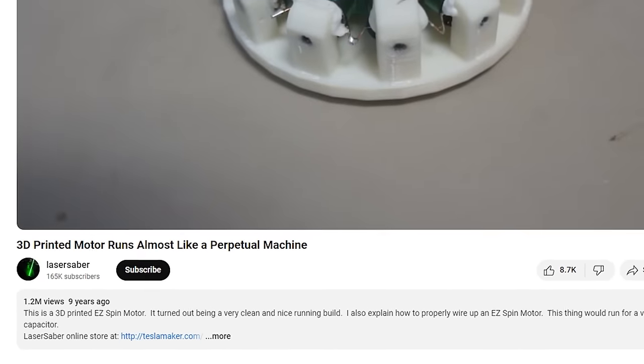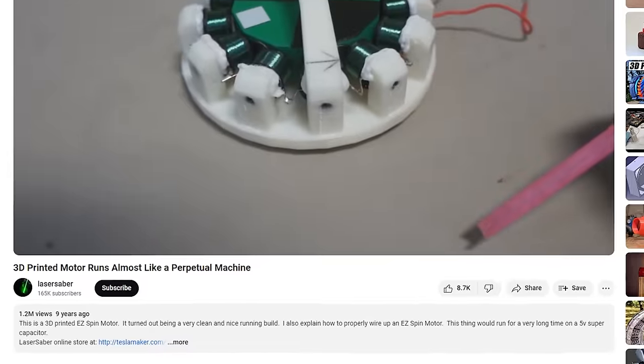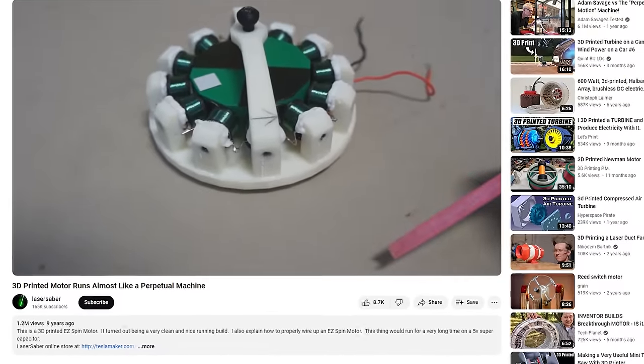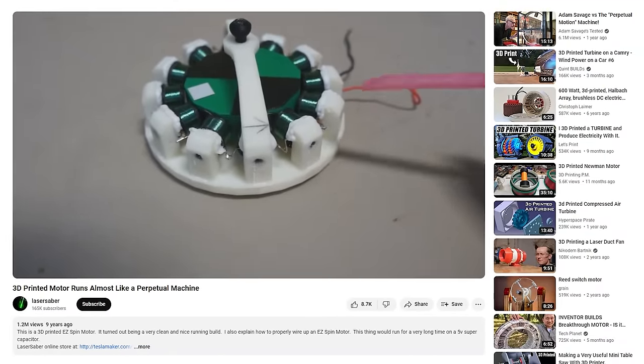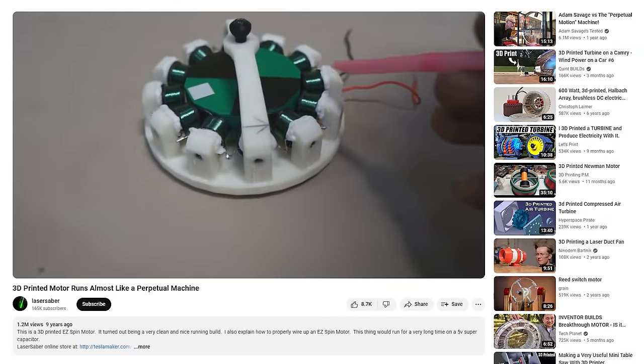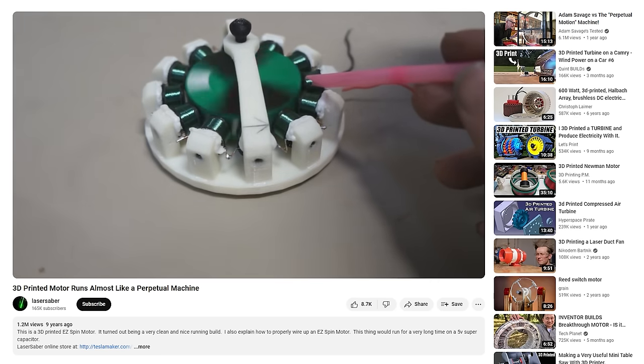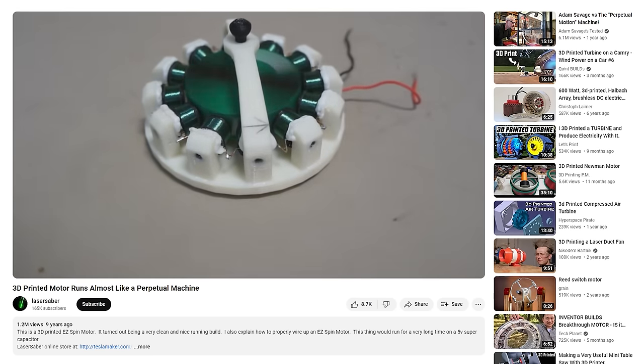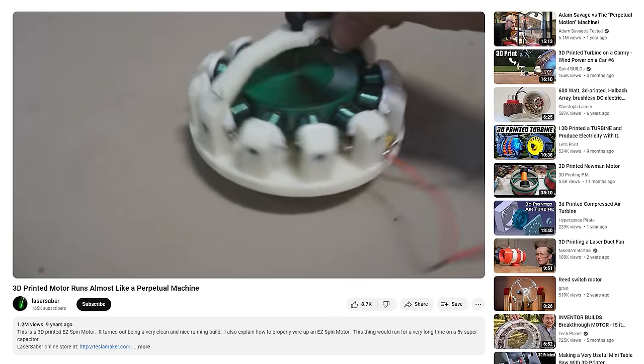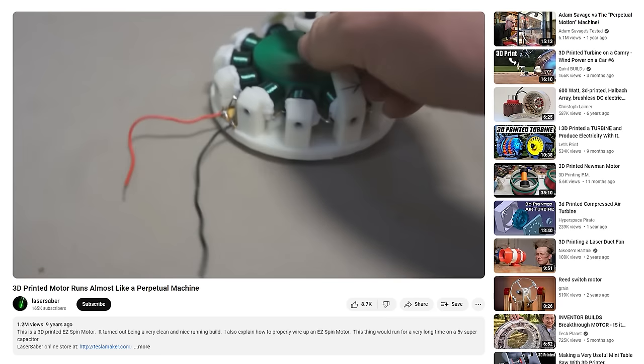A few years ago, I came across a video uploaded by Laser Saber, and he built a motor that runs almost like a perpetual motion machine. This motor had a spinning disc with magnets on it and 12 coils mounted around the perimeter, and by blowing through a straw, he could spin the wheel up to speed and the motor would seemingly spin forever.